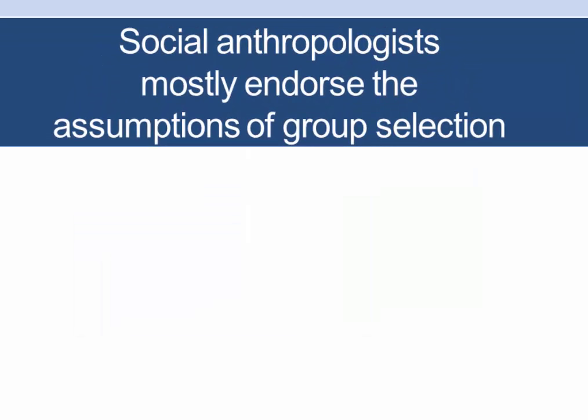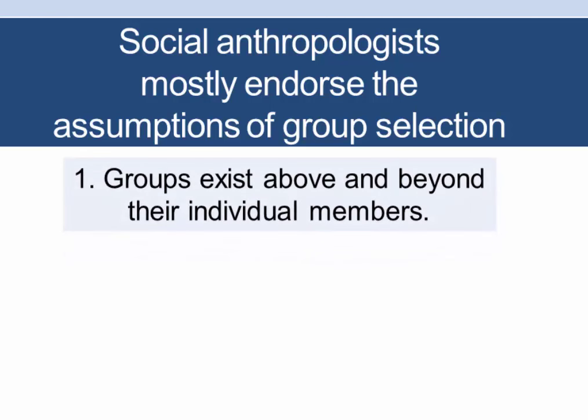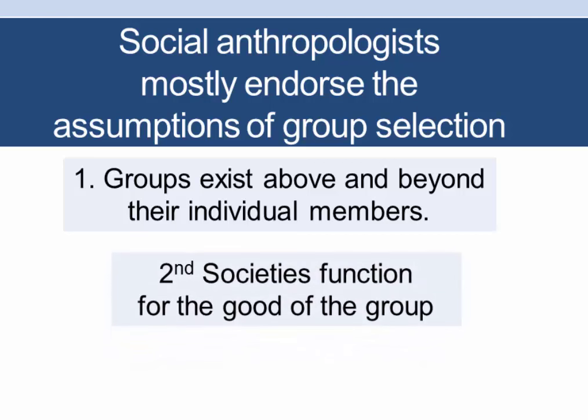If we look across social anthropology, we'll find that overwhelmingly most social anthropologists endorse the assumptions of group selection, though they rarely give it very much thought. These assumptions are that groups exist independently of their membership — they exist above and beyond their individual members — and this means that societies function for the good of the group as a whole. So we can refer to group-level structures to explain individual behaviors and suggest that those individual behaviors are shaped by the society.